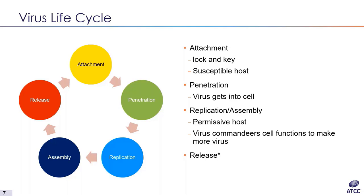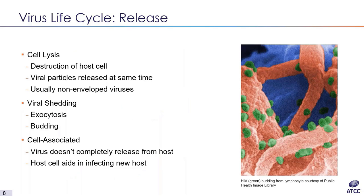After the virus successfully attaches to the host, the next step is penetration, where the virus enters the cell. Once inside, the virus can begin to replicate — but just because a virus can get inside a cell doesn't mean it can replicate there. Viruses can only replicate in permissive hosts. During replication, the host cell makes copies of the virus genome and produces viral proteins, which eventually assemble into infectious viral particles that are released to infect other cells.